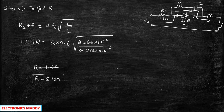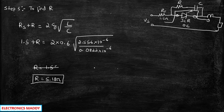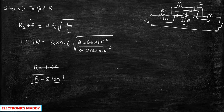We have found L, C, and R — all parameters are solved. The key challenge in this problem is that students often assume the given series resistance RS is the snubber resistor, and substitute it directly, which leads to errors. The correct approach is to use RS + R = 2ζ√(L/C) and solve for R.